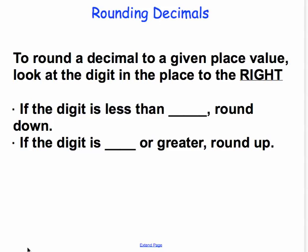When we round decimals, we follow a few simple rules that are listed on your screen. To round a decimal to a given place value, we must first look at the digit in the place to the right of where we want to round to. If this digit to the right is less than 5, we are going to round down. If the digit is 5 or greater,